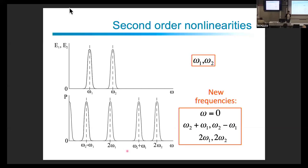In the linear response we have one peak at ω₁ and one at ω₂. At second order we have peaks at 2ω₁, 2ω₂, one at ω₁ + ω₂, and one at low frequency ω₁ − ω₂. There is also the case where ω − ω gives a static field — optical rectification — where from an oscillating field you get something that does not depend on time anymore.